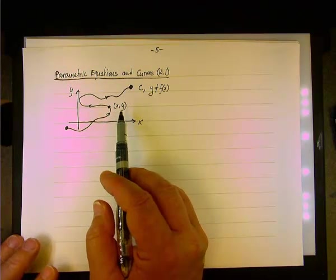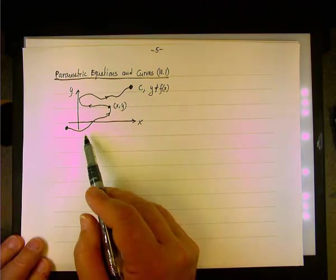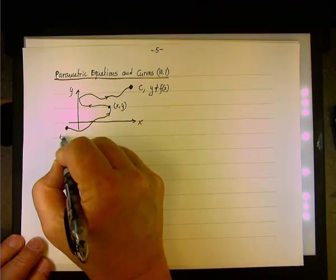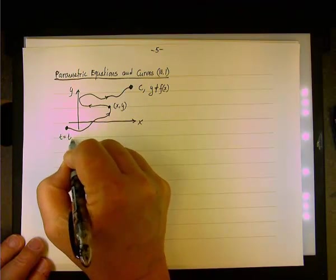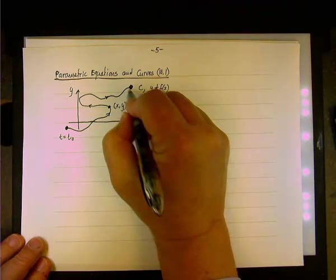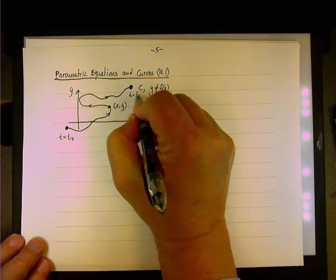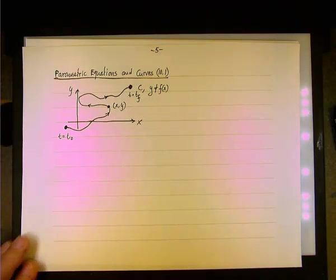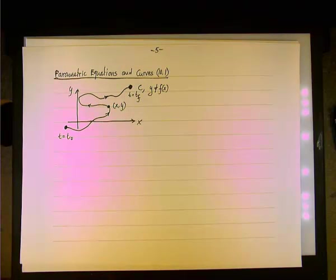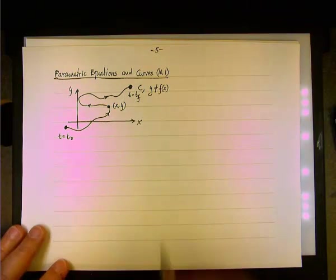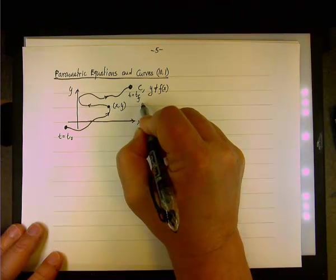But each coordinate x and y is changing in this case because we are talking about traveling with time. Let's say t equals t sub 0, the initial time. And when we get here t equals t sub f, the final time, then we can say that each coordinate is a function of time.